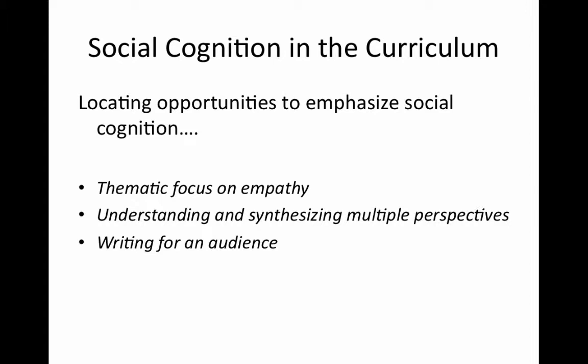By thinking strategically about the particular aspects of social cognition teachers think students in your class would benefit most from addressing, teachers can make thoughtful choices regarding the specific features to highlight and to feature positive social understanding. Beyond the thematic and topical areas of focus, teachers can also draw attention to the social understanding that goes into identifying perspectives, describing perspectives, and synthesizing multiple perspectives on the same topic. This kind of work is called for by the instructional approaches targeting the Common Core Standards and is foundational for rigorous academic work in general. At the same time, close attention to differences in perspectives can be explicitly connected to social learning, which may be especially important for struggling students.